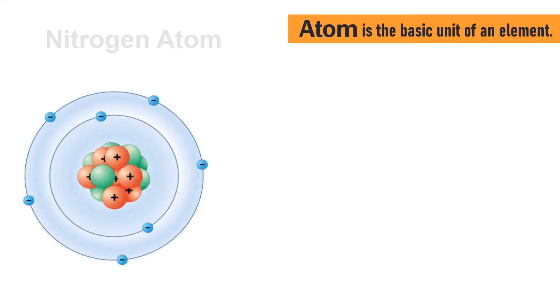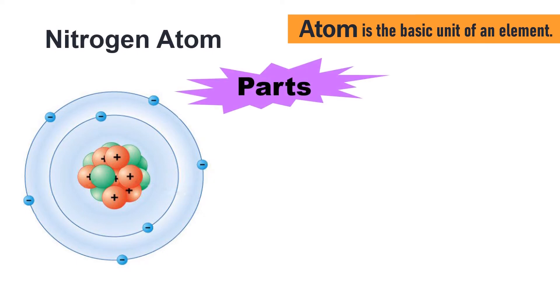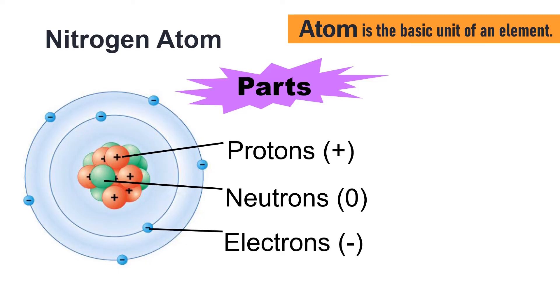Remember the atom? Atom is the basic unit of an element. This is a nitrogen atom. Atoms have three parts: protons, which are positively charged; neutrons, which have no charge; and electrons, which are negatively charged. The number of protons is the atomic number of an element.